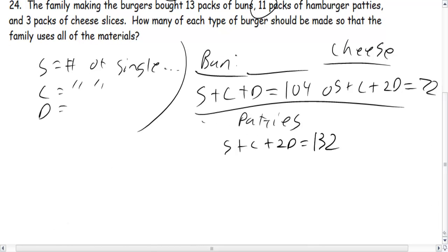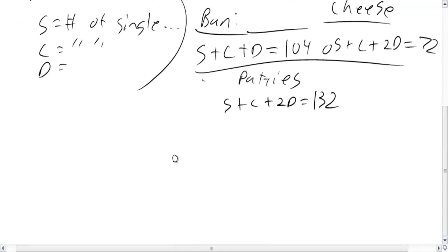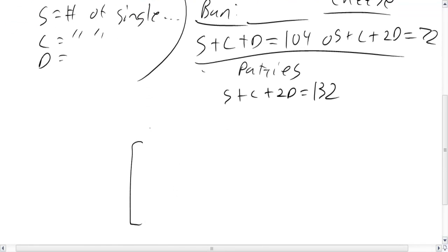So we're gonna have a matrix. Remember, your variables are the columns, so maybe we'll call it singles, cheeseburgers, doubles, and then what we're equaling.